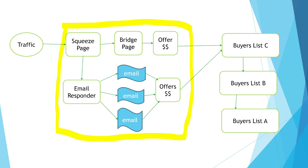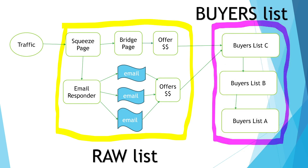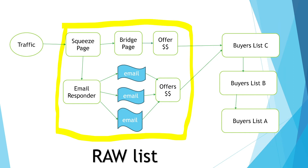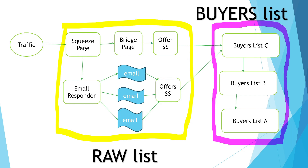This part of the system is called the raw list — it is purely there to collect emails. From this raw list, we want to collect buyers. Whoever buys from this section will go into the buyers list, and it's the buyers list that makes the money — about 90% of your money. The raw list collects all the emails, presents low-ticket offers, and when they buy, they move into the buyers list for higher-priced offers. The reason the buyers list is so powerful is because when they buy from you, they tend to know you, like you, and trust you — and that's why 90% of your money comes from the buyers list.